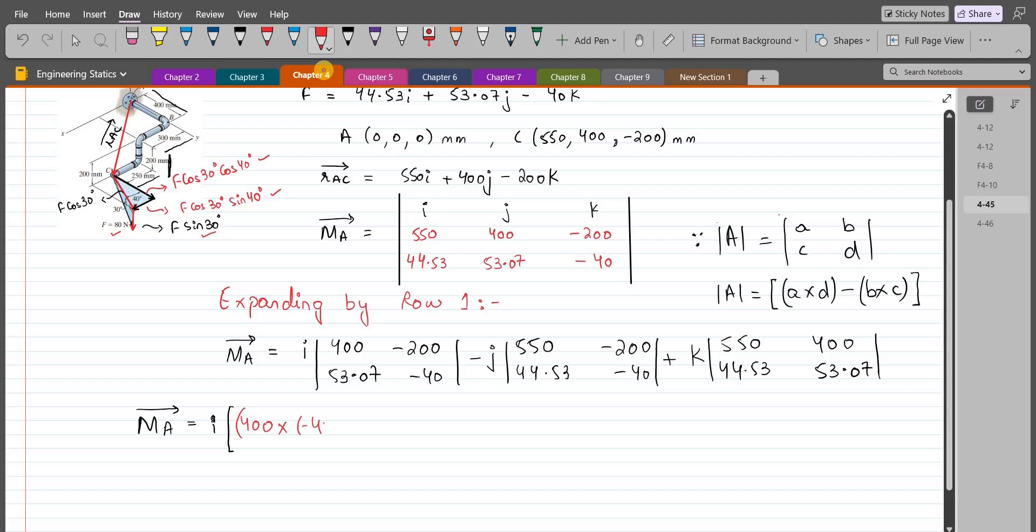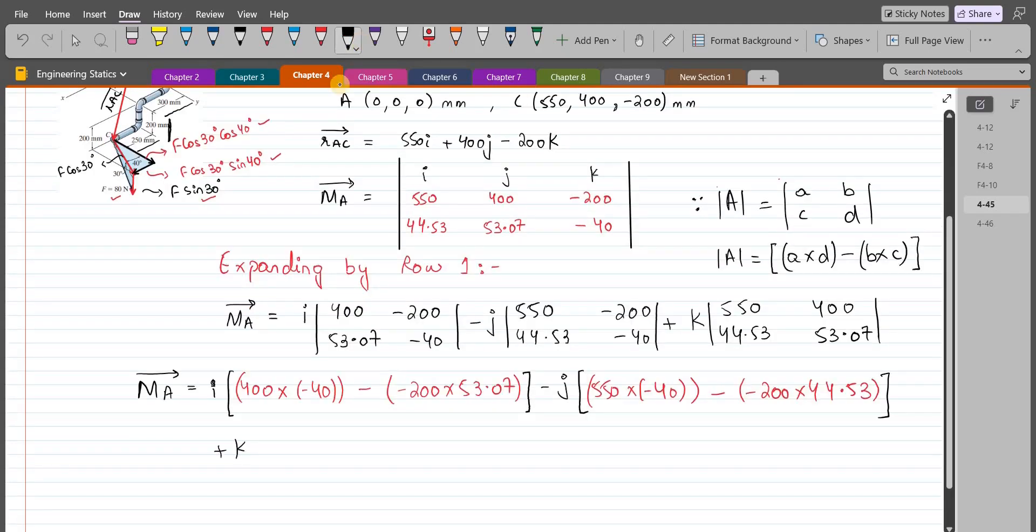So we have 400 into negative 40 minus negative 200 into 53.07, minus j. We have 550 into negative 40 minus negative 200 into 44.53, plus k.